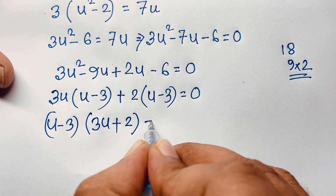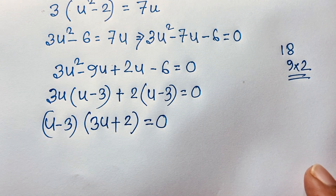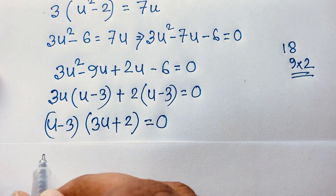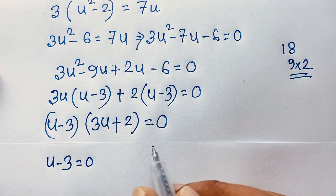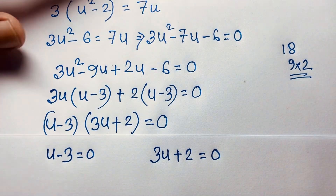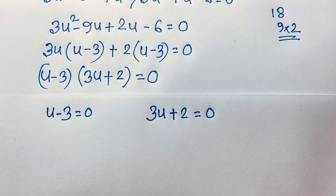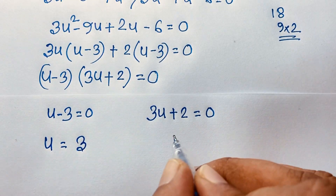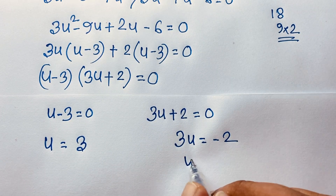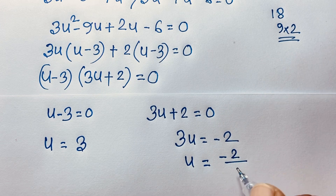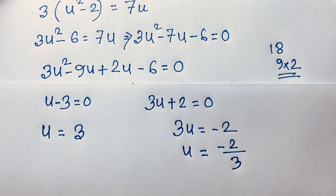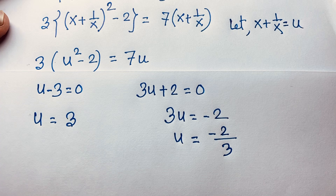We have two cases. Case one: u minus 3 equals 0, giving u equals 3. Case two: 3u plus 2 equals 0, giving 3u equals minus 2, so u equals minus 2 over 3.